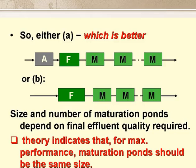The size and number of maturation ponds depends on the final effluent quality we need to produce, and for maximal performance the maturation ponds should all be the same size. This may not, of course, be possible, but at this process stage of the design, we assume that it is.